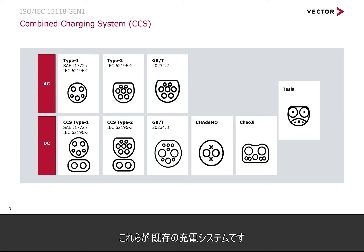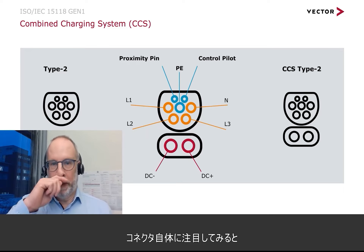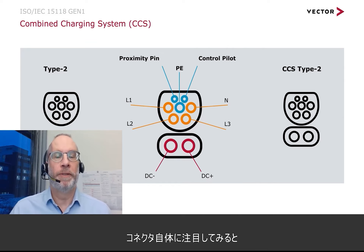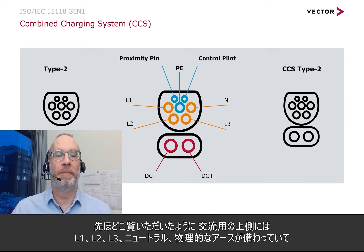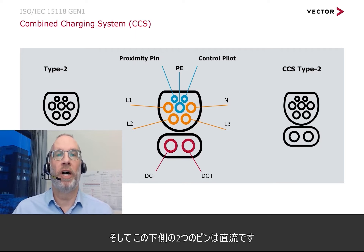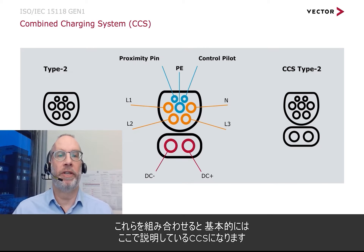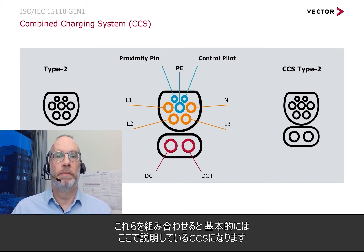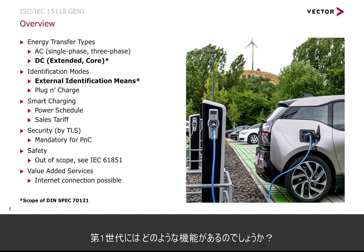Looking directly at the connector itself, on the upper side we have the AC part with L1, L2, L3, neutral, and the PE pins. Then the communication pins with proximity and control pilot on the upper side, and on the lower part the two DC pins. Together, this is basically the combined charging connector that is described here.